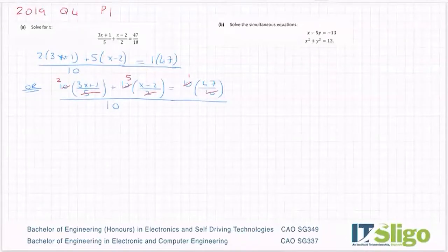So it's a case of whichever way makes more sense in your head. There isn't one way better than the other, but either way you have to multiply 2 by (3x + 1), 5 by -2 and then equals 47. So let's do that. 2 by 3x is 6x, 2 by 1 is 2 plus 5 by x is 5x, 5 by -2 is -10 and that's equal to 47.